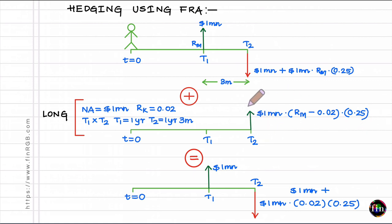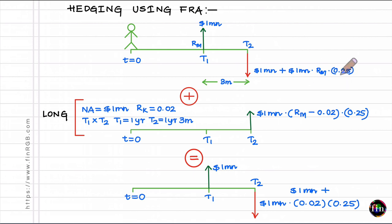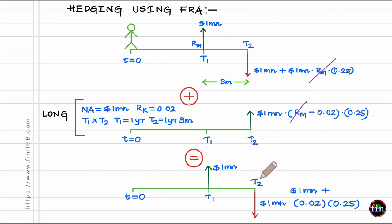When I take this FRA payoff and combine it with my original cash flow diagram, the net cash flow from the two positions combined looks like this: I'll be receiving 1 million dollars at T1, and paying out principal plus interest offset by the FRA payoff. These cash flows net out — the R_M terms cancel — and net net what I'll be paying out is equal to 1 million principal plus 1 million times 0.02 times 0.25.